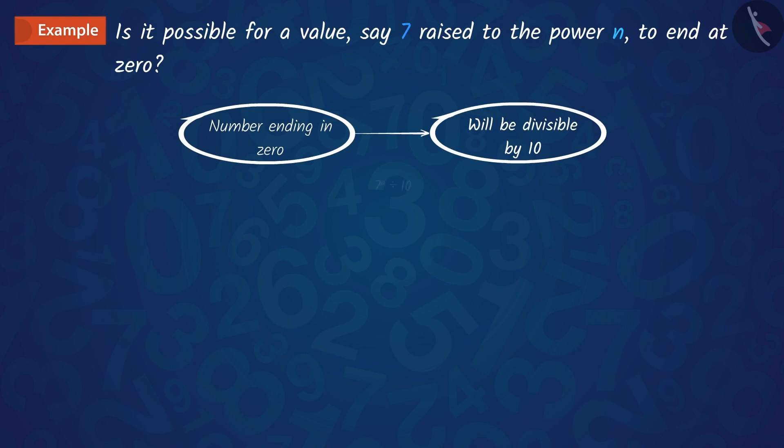So, we can say that if the number 7 raised to the power n ends with digit 0, then it will be divisible by 10. This means that 7 raised to n should have 2 and 5 among its prime factors.